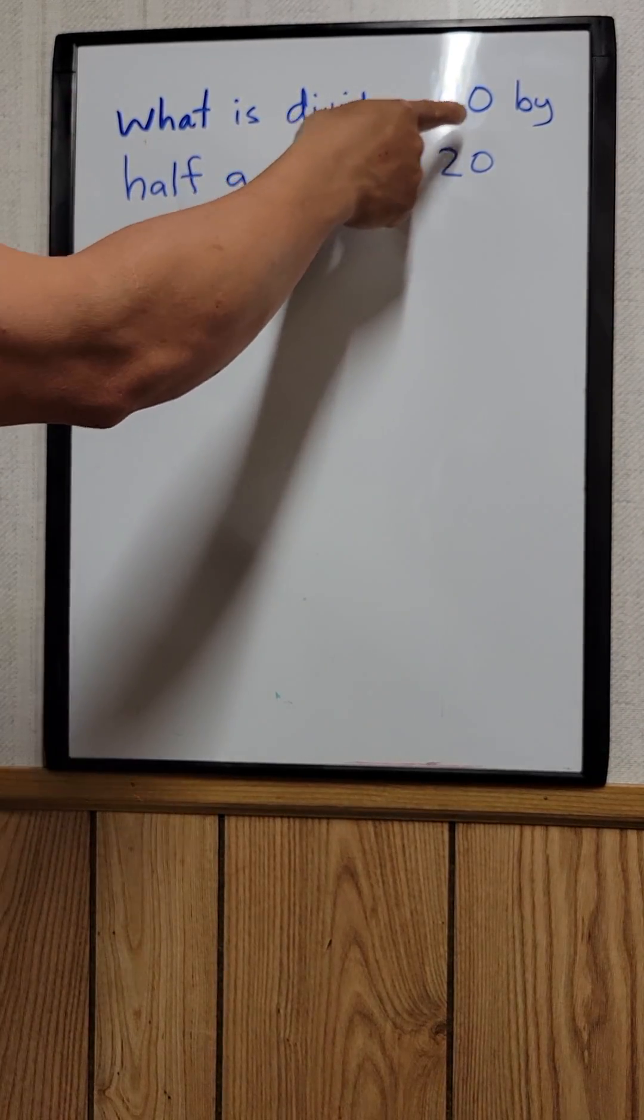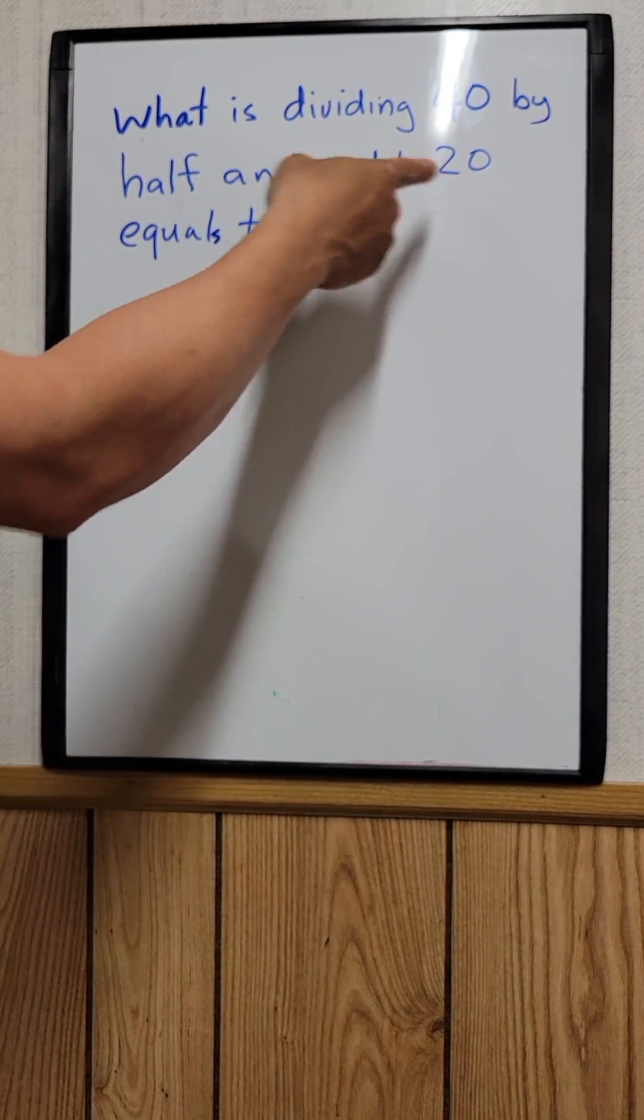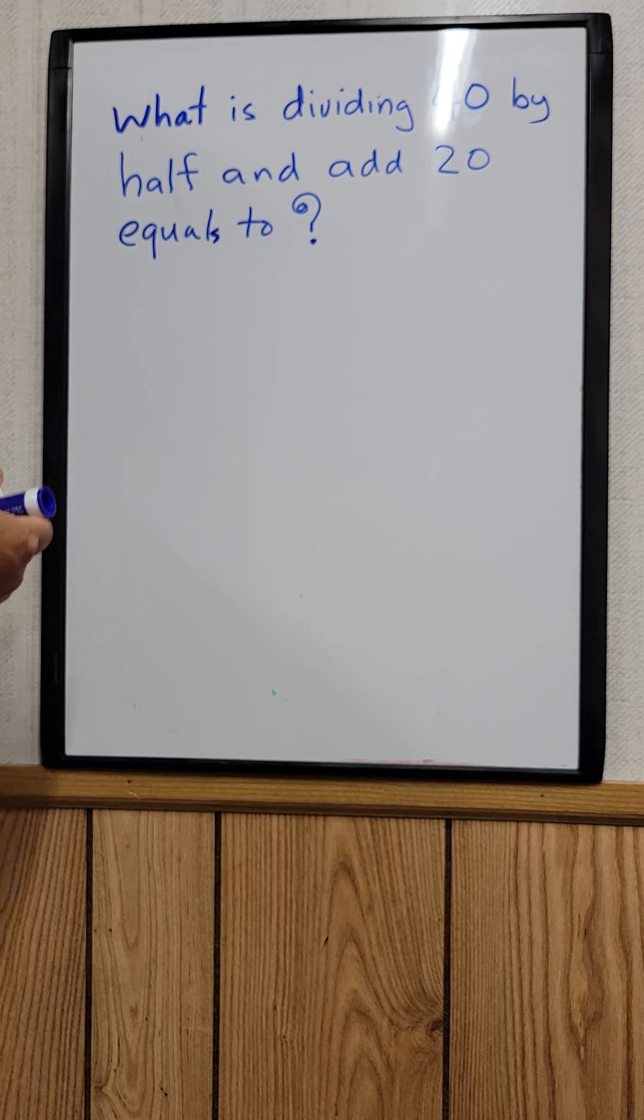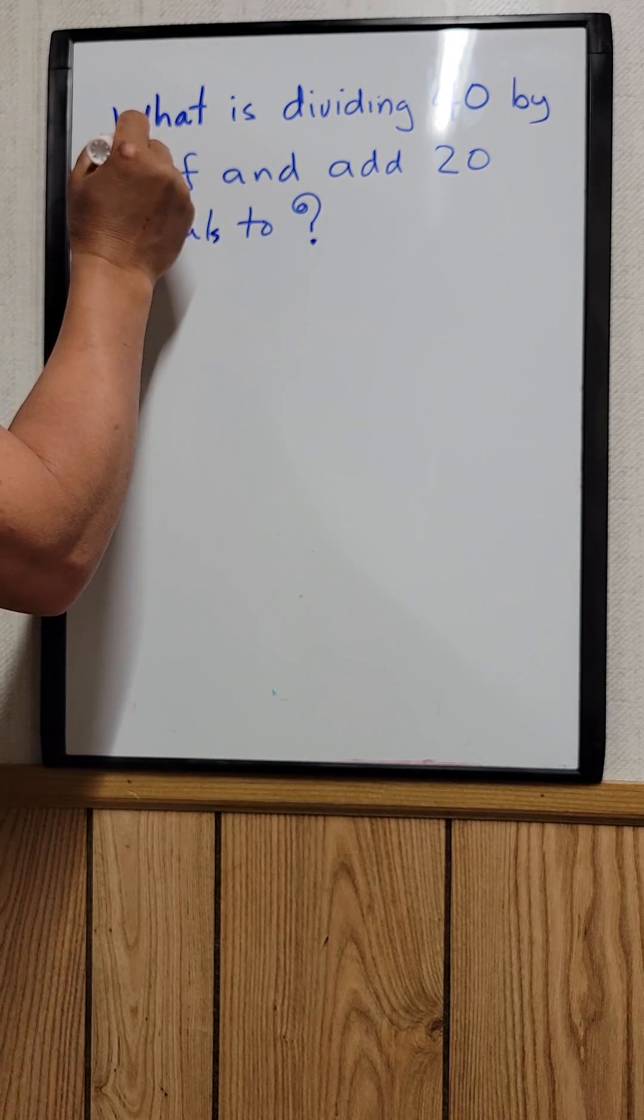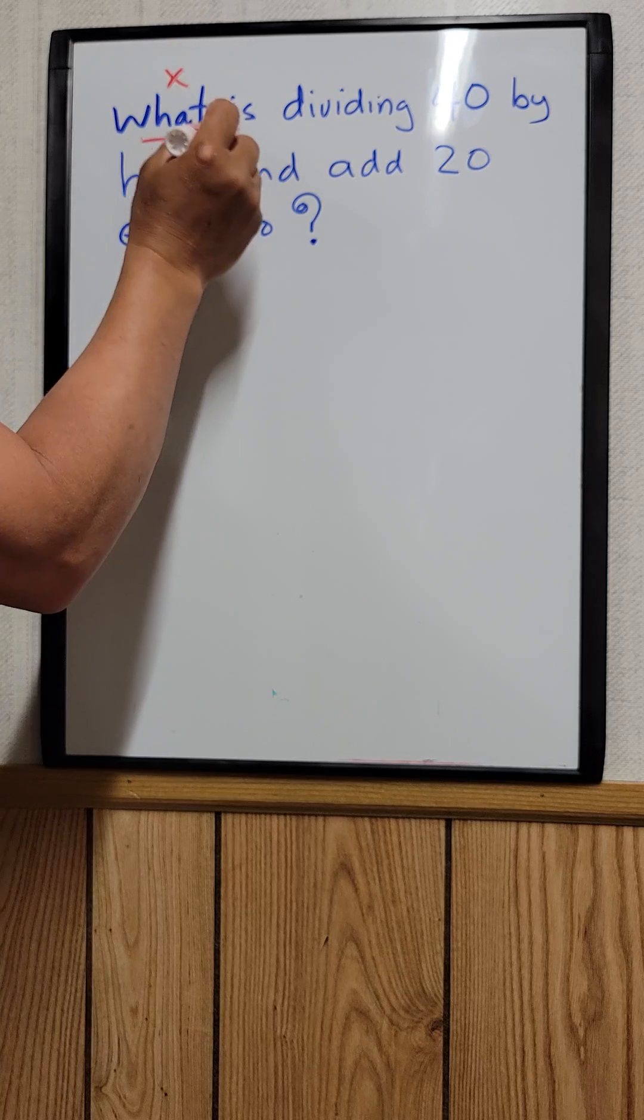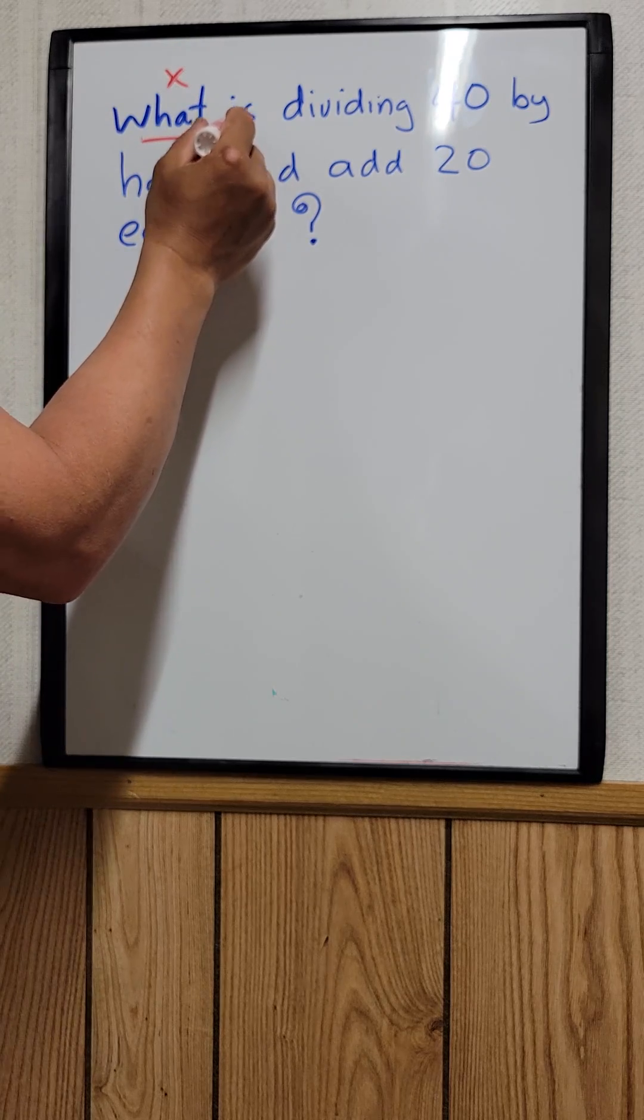What is dividing 40 by half and add 20 equal to? You don't know what the 'what' is, so we can just let x equal to that. So x equals... the word 'is' just means equal.